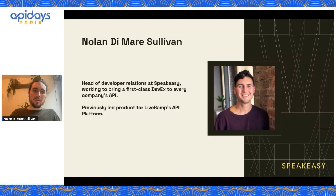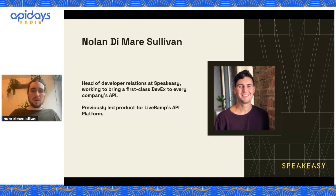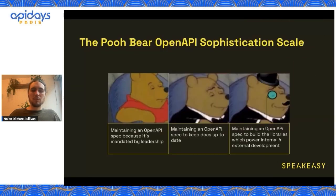I'm going to be talking about CodeGen today. CodeGen is something that most people are using their OpenAPI spec for today, but if you're just getting started, there are a few tips and tricks that I'm going to show you that will spare you a lot of pain on your journey. To start, this is typical of most companies' journey through using an OpenAPI spec — I call it the Pooh Bear OpenAPI sophistication scale. It starts off with maintaining an OpenAPI spec because it's been mandated by the leadership team. It's a pain in the neck, it's not really something that people want to do, and they're not deriving any value from it — but someone read that it was important to have an OpenAPI spec, and it gets mandated to the engineering organization.